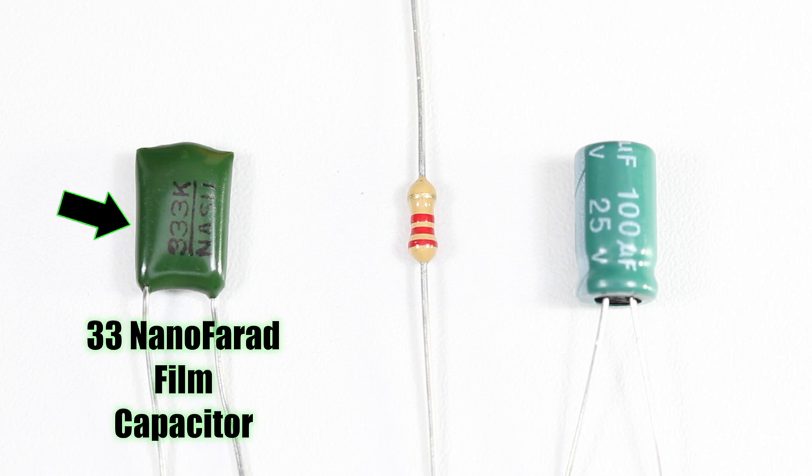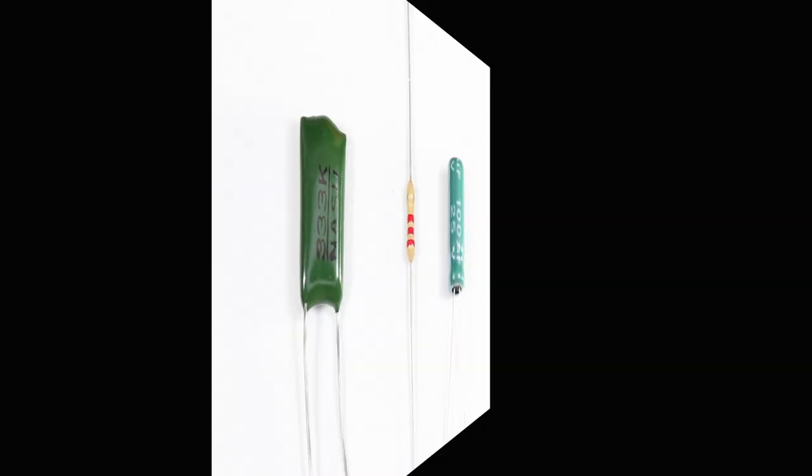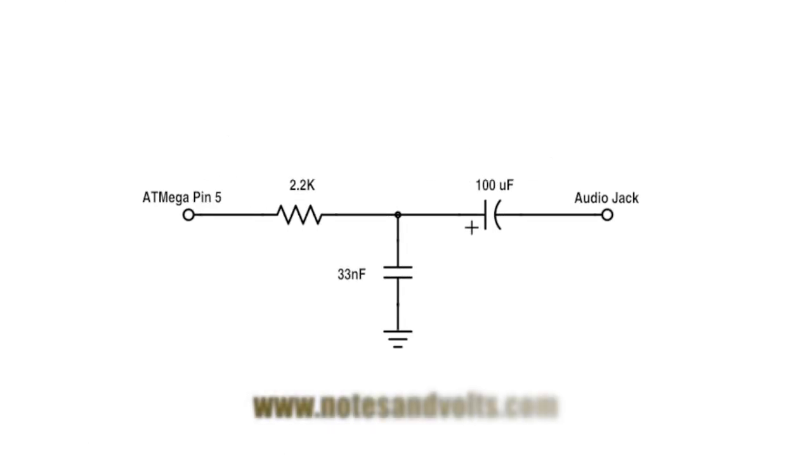I found 33 nanofarads to be a good compromise between signal level and sound quality. When I went with a higher value, I found some of the personality of the synth was lost. Here's a schematic of the circuit we'll be building. Visit the link below to download a copy.